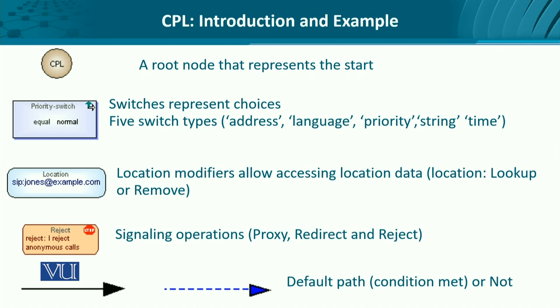The root node represents the start. The rectangular entity represents a switch, which allows certain choices — such as address, a certain choice of language, priority, a certain string if it's present, or a certain time.